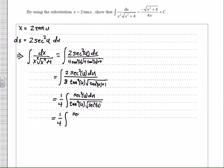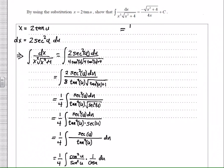So then we can get secant of u, which we'll divide out with one of the secants in the numerator.